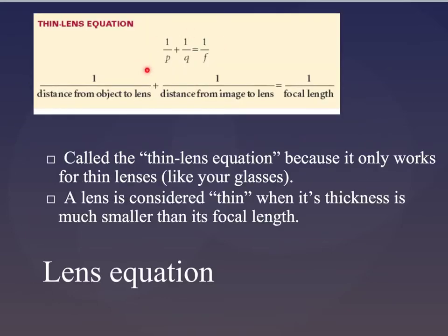This is the lens equation and it's similar to the one for a mirror, but we didn't really talk about it when we went over mirrors. So what we need to remember is that P here is the distance of the object, Q is the image distance from the lens, and F is our focal length. This is called the thin lens equation and we use the word thin specifically because it only works for thin lenses like your eyeglasses. A lens is considered thin when its thickness is much smaller than its focal length.